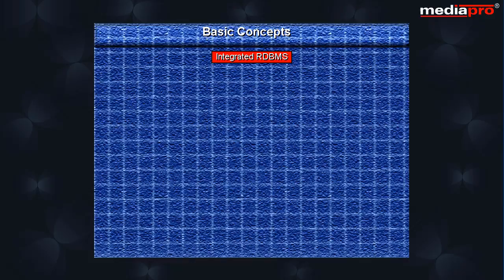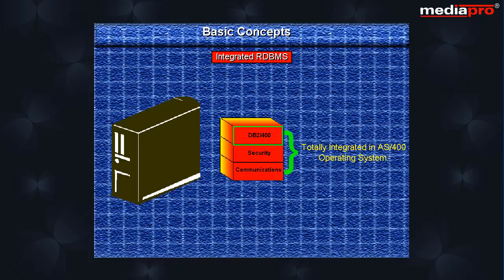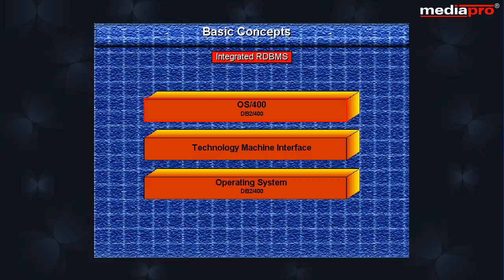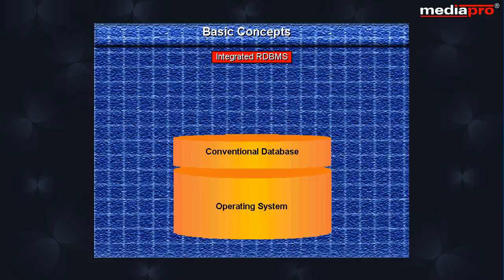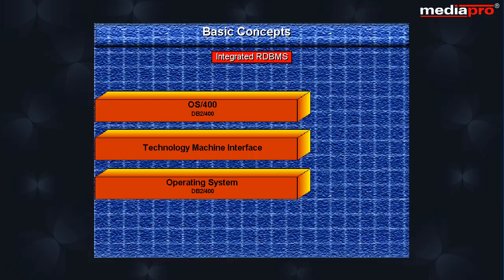An integrated relational database management system: DB2-400, the relational database for the AS400, is totally integrated with the AS400 operating system. DB2-400 lies partly in the OS400 and partly below the machine interface, that is, in the licensed internal code. This is unlike other conventional database products that sit as separate components on top of an operating system. Because of this integration, DB2-400 achieves a much higher level of efficiency than one built on top of an operating system, and is also very tightly integrated with the other system components with which it communicates.